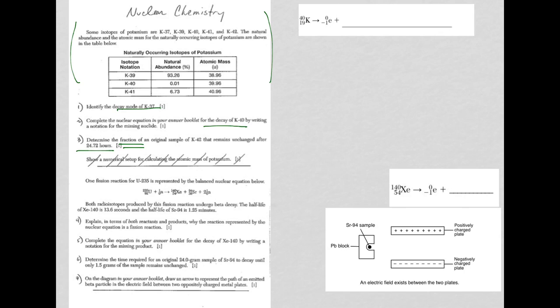We want to determine the fraction of potassium-42. I write a table for mass and time. Now we're determining the fraction, which means that we're starting with the mass. We're starting with the whole thing. So I'm going to use a mass number of 1. The time to start is 0. And we want to know what the fraction is going to look like after a certain amount of time, and that time is 24.72 hours.